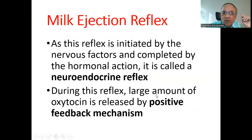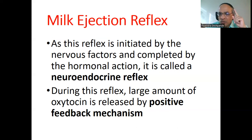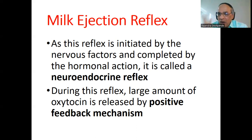During this reflex, a large amount of oxytocin is released by a positive feedback mechanism. The baby sucks, touch receptors send signals, oxytocin is secreted, and milk ejection occurs. Then the baby sucks again, signals go again to the hypothalamus, again to the posterior pituitary, and more oxytocin is released. This cycle continues as long as the baby is sucking. When the baby leaves the nipple, the cycle breaks and breast milk stops.